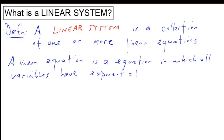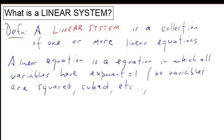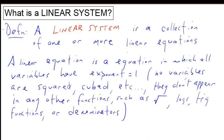What's a linear equation? It's an equation in which all variables have exponent equal to 1. There's no squares, cubes, etc. And there's no variables inside of functions such as square root, logs, trig functions, or variables in denominators.